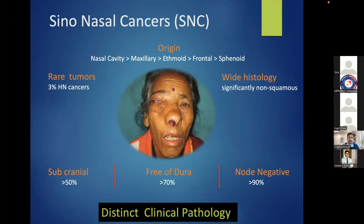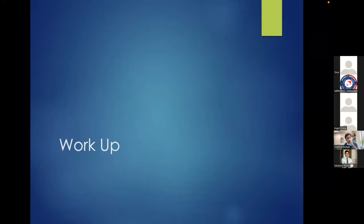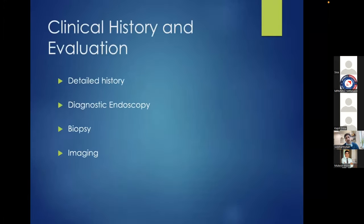The majority of these tumors, if arising from ethmoids or maxillary sinus, are infrasubcranial in location. Very few involve the dura and they are generally node-negative. Proper evaluation and workup is critical so that you do not end up in an unplanned situation on the operating table.